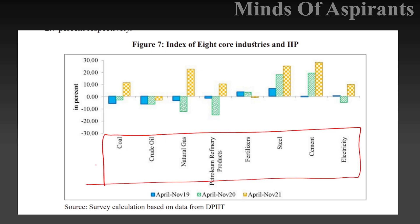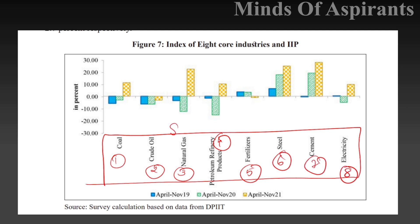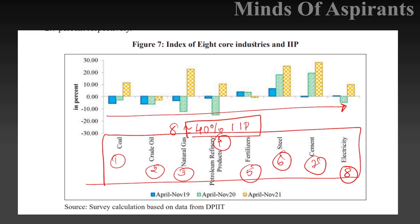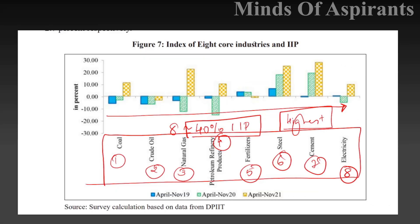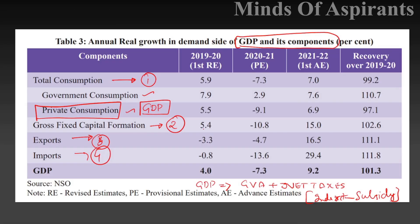These eight sectors are: coal, crude oil, natural gas, petroleum products, fertilizers, steel, cement, and electricity. Together they contribute around 40 percent of the Index of Industrial Production — that was one exam question. Which among them contributes the highest was another question. This will be covered in the industries chapter.